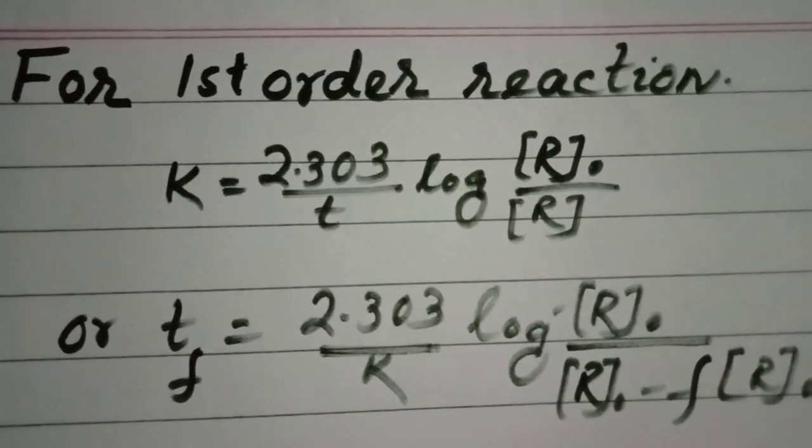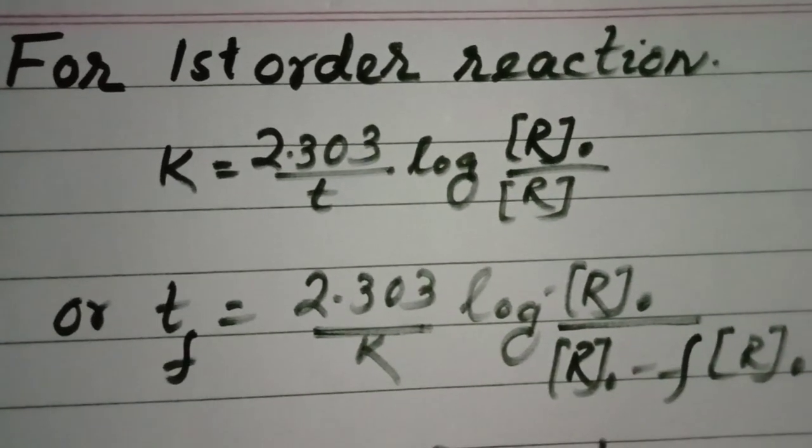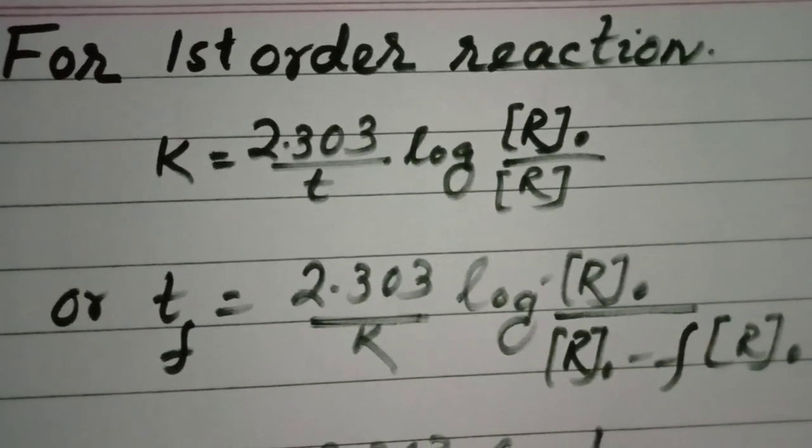Hello, welcome back after a long gap. For first order reaction, k is equal to 2.303 by t log r0 by r.